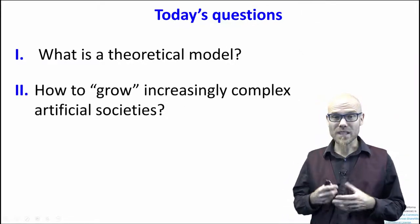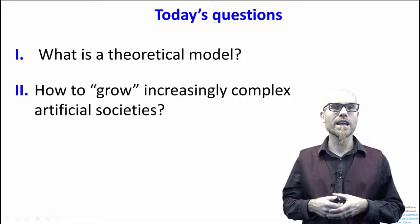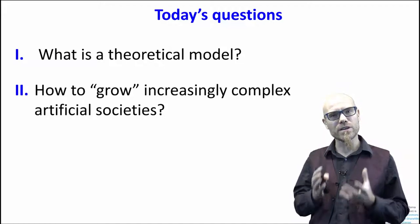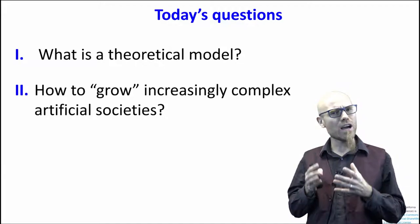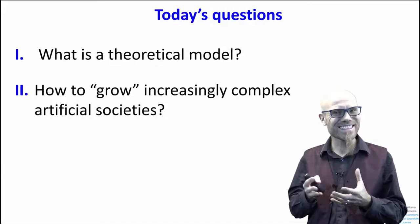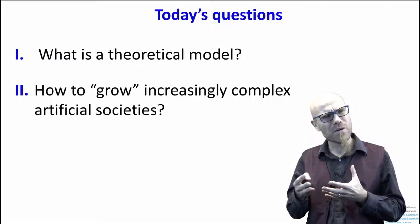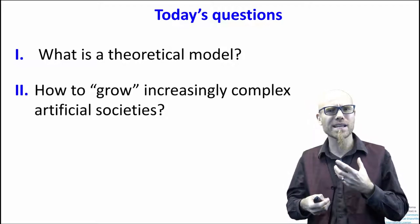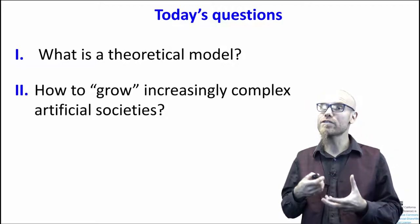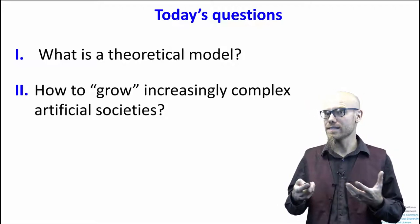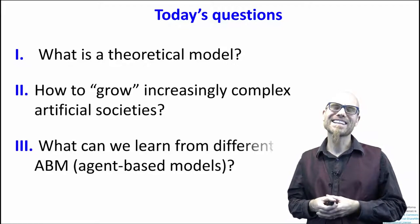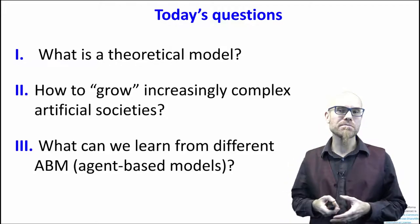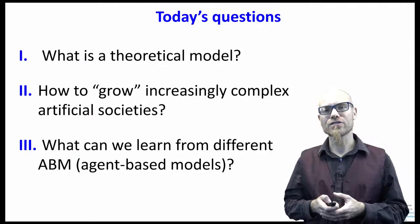Second, we will play around with computer simulation — how to grow increasingly complex artificial societies. We start with very simple, very abstract models that have little to do with reality, then try to grow them more complex to simulate reality. Third, we'll explore what we can learn from different agent-based models — ABM, that's often the shortcut.